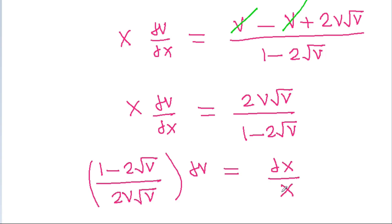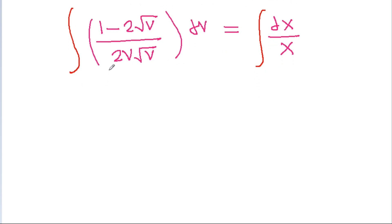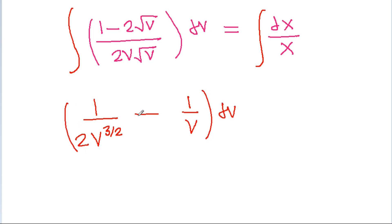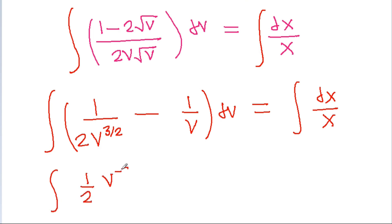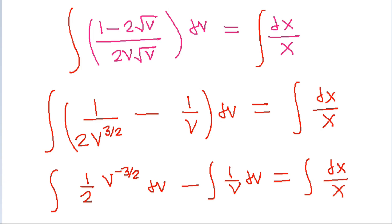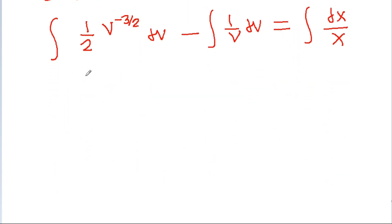Now if we separate variables and integrate both sides, we get the integration of (1 minus 2√v) divided by (2v√v) dv is equal to the integration of dx/x. This splits into integration of 1/(2v^(3/2)) dv minus integration of 1/v dv equals integration of dx/x.